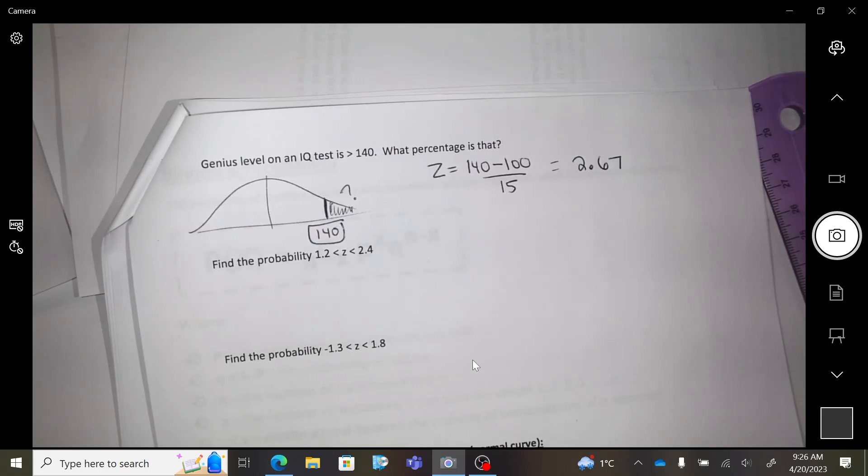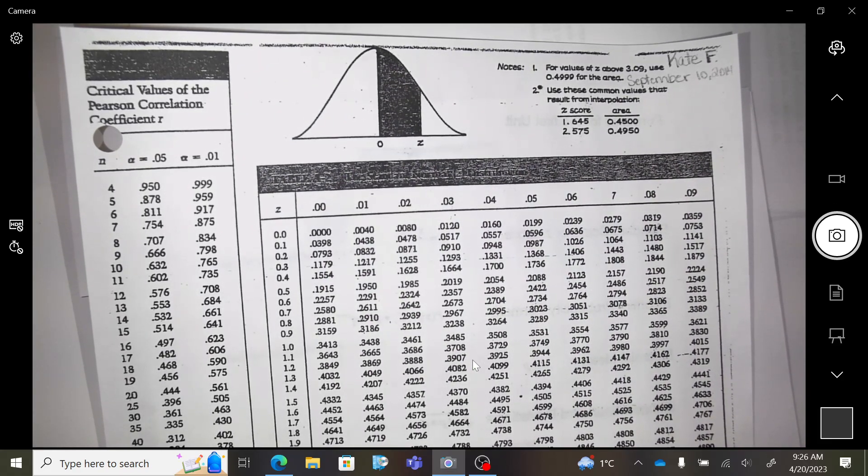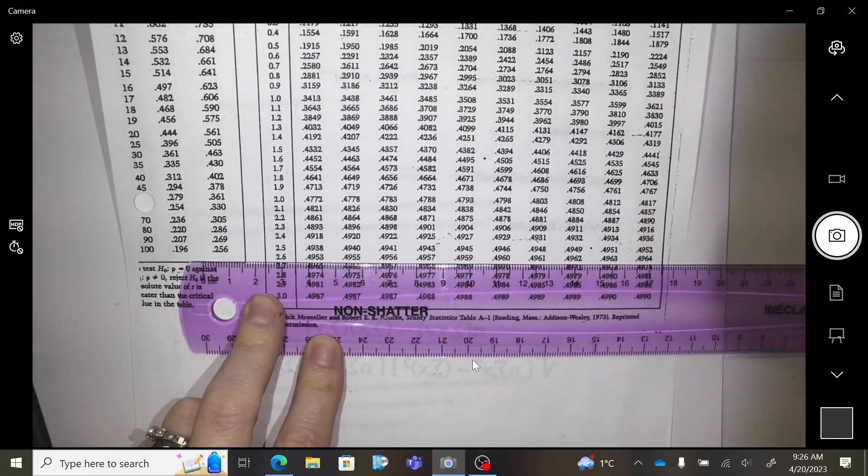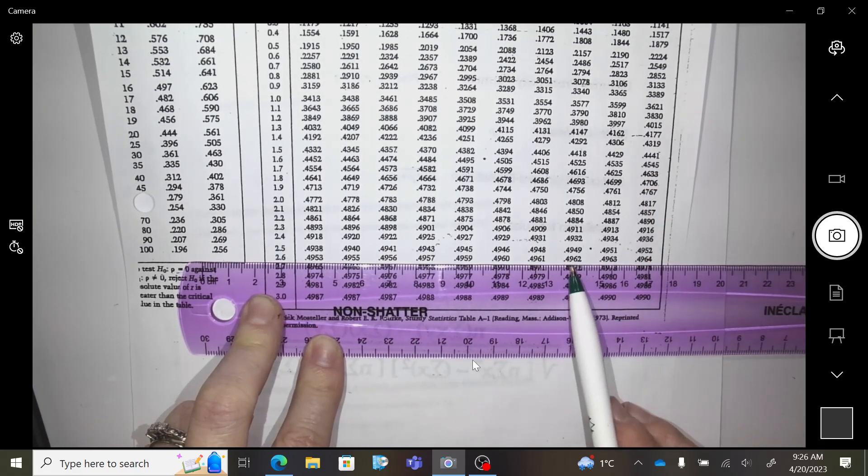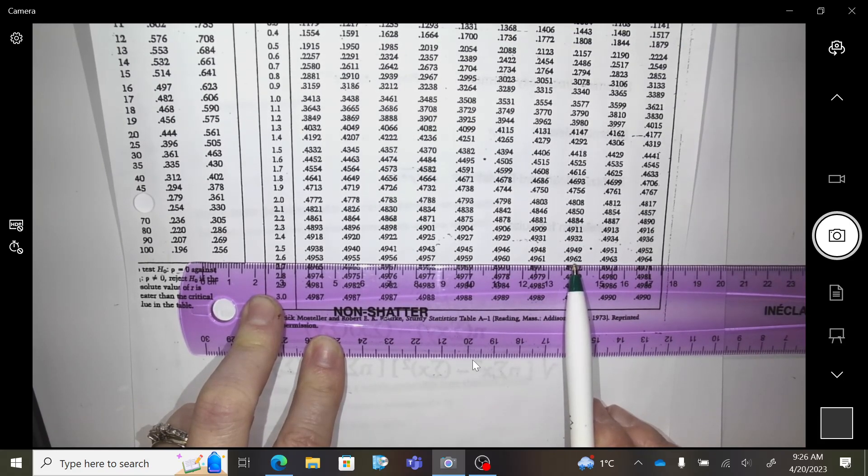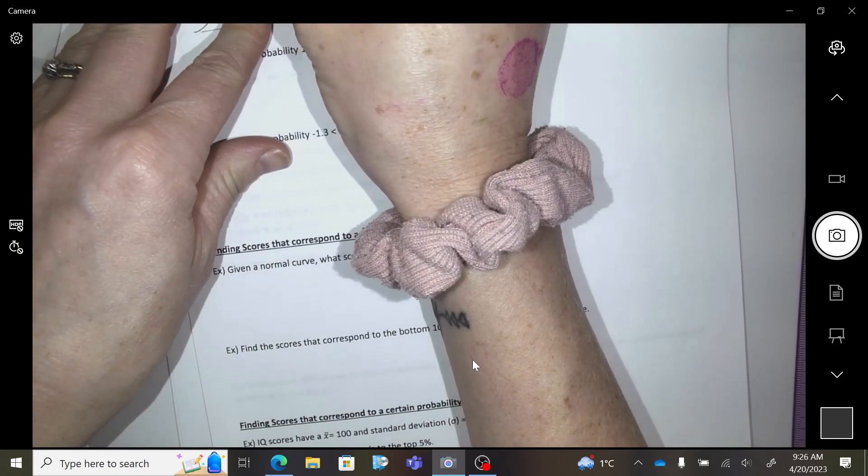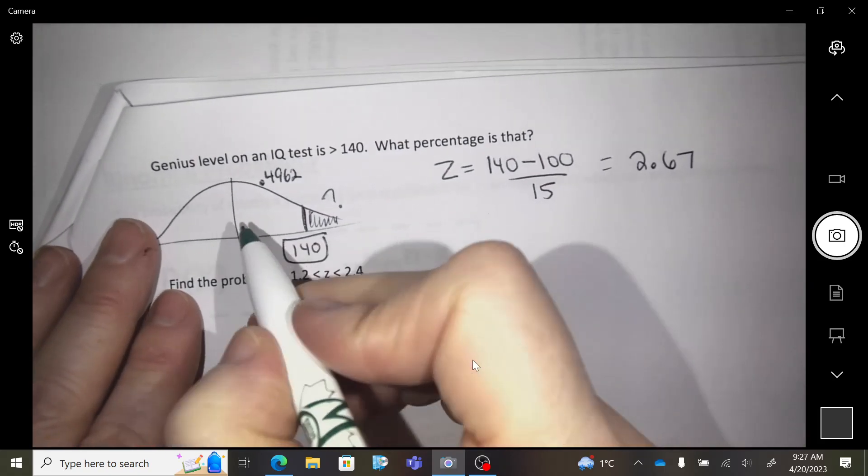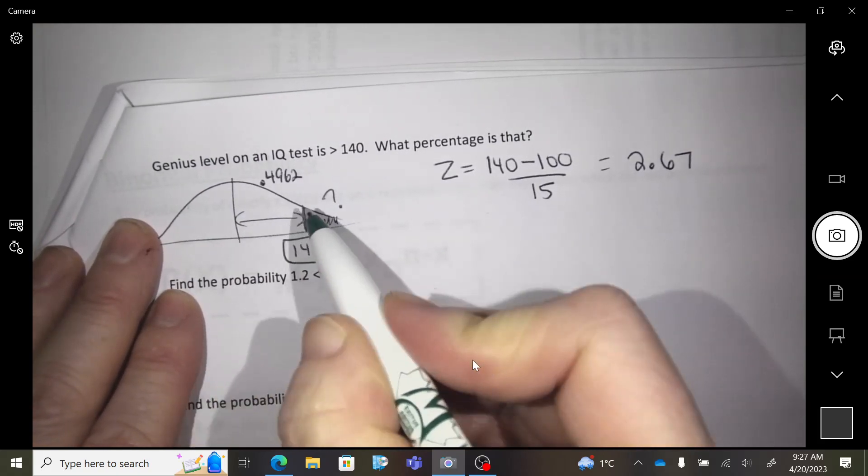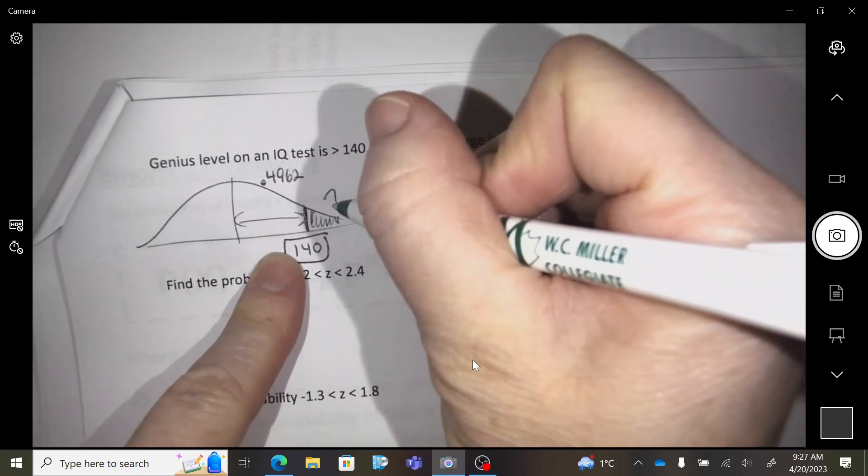I predicted a big z-score, right? Because I'm way over there. Okay, so how do you find that on the chart? Go 2.6 and then right to the 7, so 2.67. Are you at 0.4962? So what does 0.4962 mean? That's the percent between me and the middle.